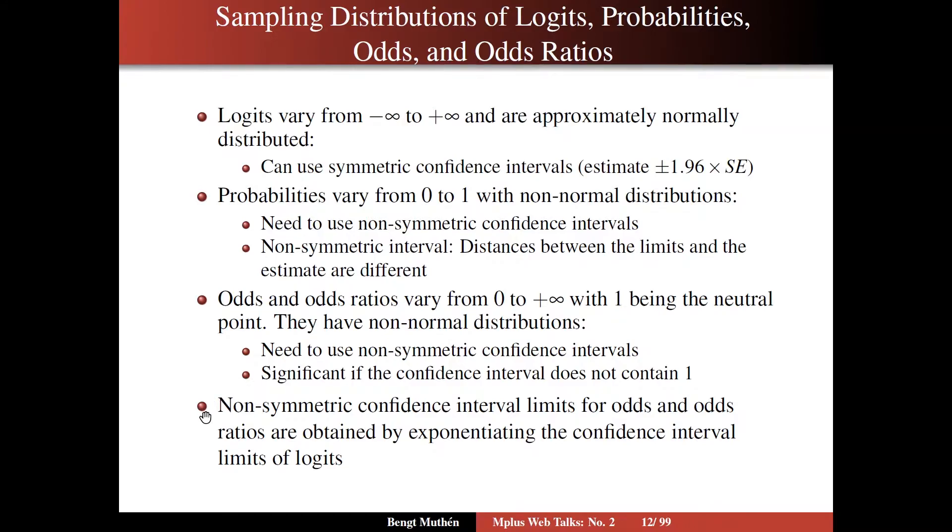Non-symmetric confidence interval limits for odds and odds ratios can be obtained directly by exponentiating the confidence interval limits of the logits, where the logits are normally distributed. You take the limits of the normal distribution for that logit estimate and then exponentiate the upper and lower limit. We're going to get into detail of that further on. Thereby you get non-symmetric confidence intervals. This is done systematically through the Mplus output.